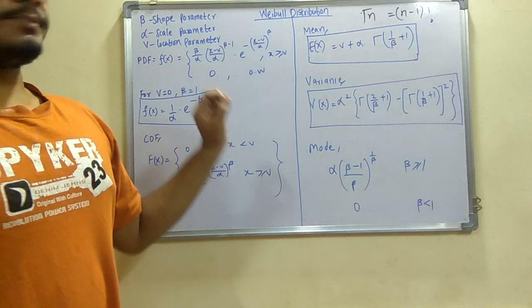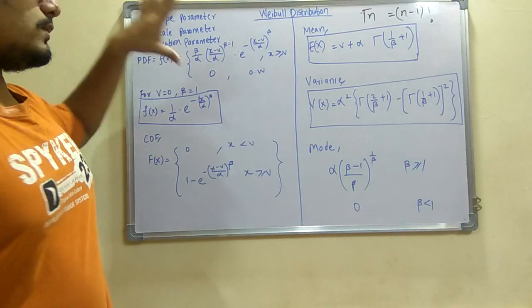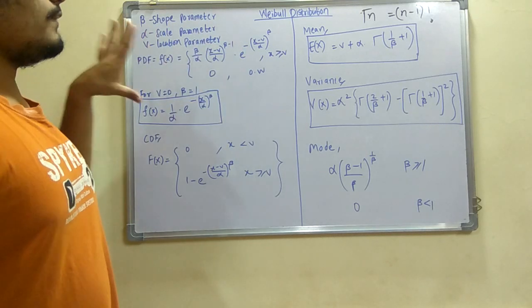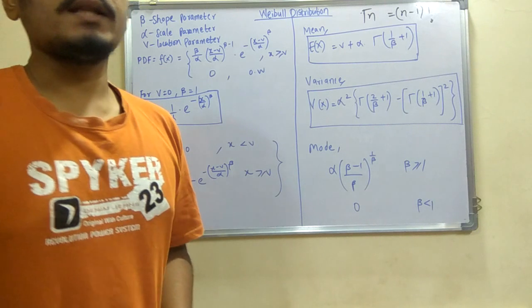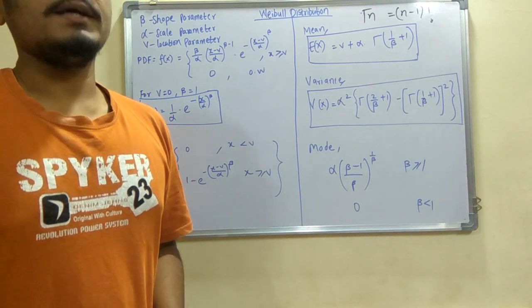So this was a small description of the parameters alpha, beta, and V in variable distribution. Hope you enjoyed this video and found this video helpful. Please hit the like button and if you haven't subscribed to my channel please subscribe. Thanks for watching this video.